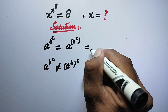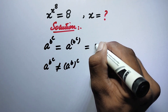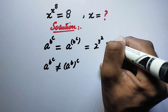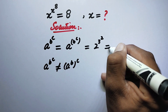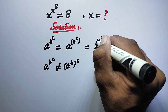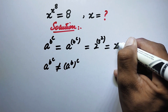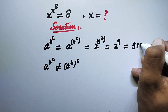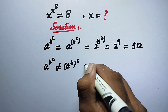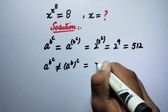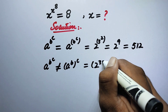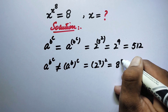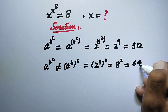We can see this with an example: 2 to the power of 3 to the power of 2. If we solve in the correct order — right to left — we get 2 to the power of 9, which equals 512. But if we solve left to right, we get 8 to the power of 2, which equals 64. These are different results.